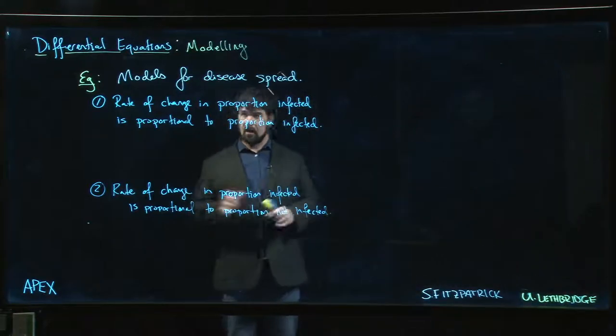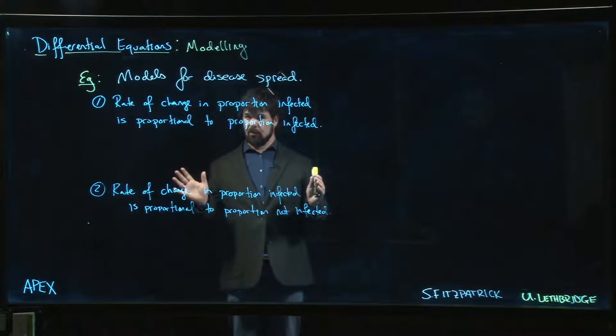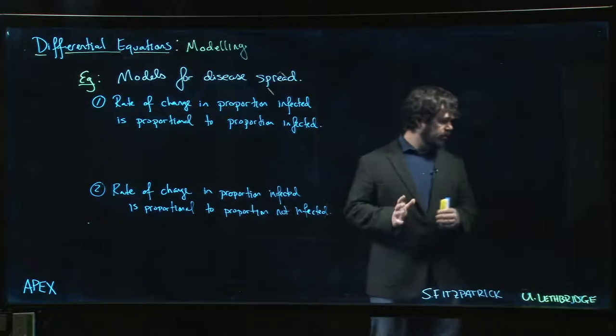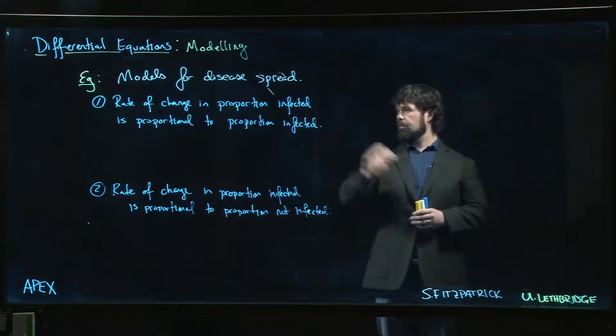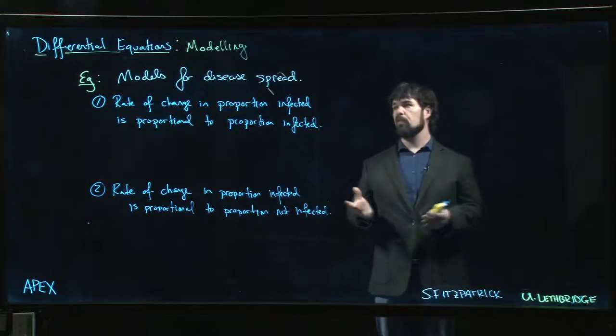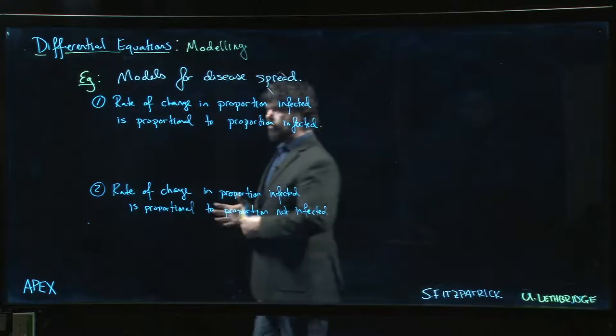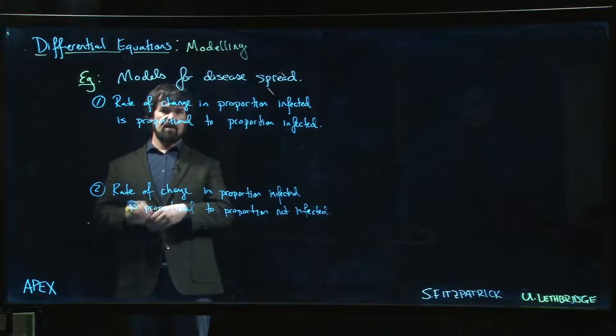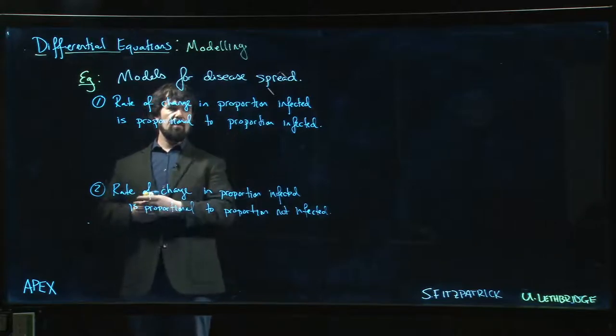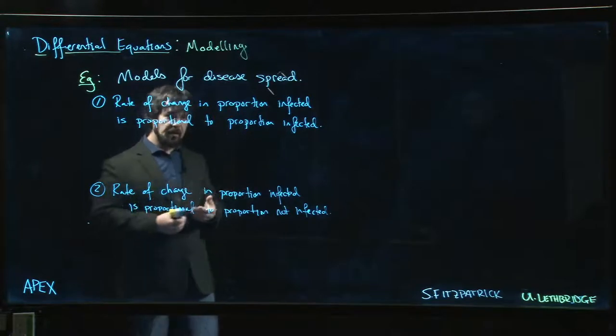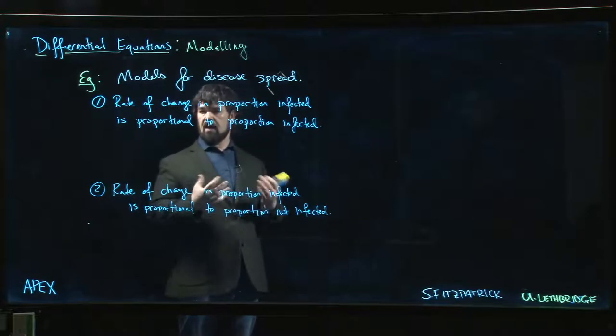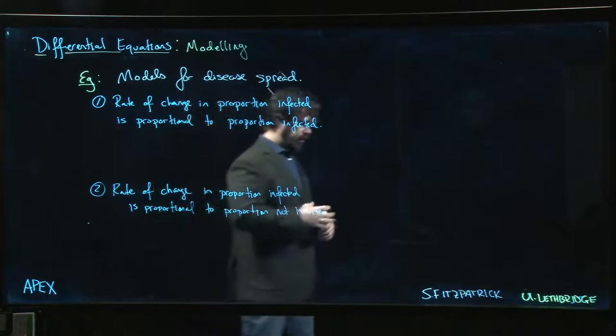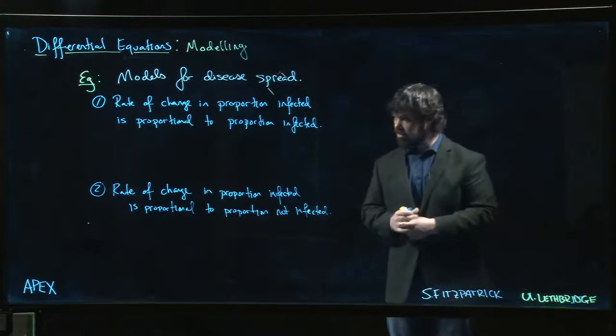Okay, so here we're going to look at two different models for the spread of disease based on certain assumptions. The assumption in the first model seems plausible: the rate of change in how much of the population is infected—the rate at which the proportion of people infected is changing—should be proportional to how many are currently infected. You need sick people to spread the disease.